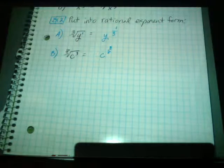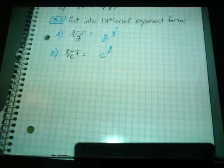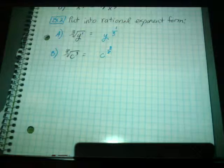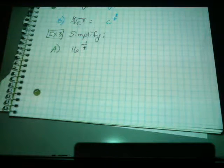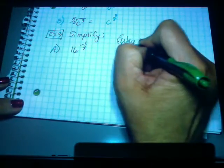So we're totally clear on how to go into radical form and out of radical form. Now we're going to simplify things that have fractional exponents. Example 3, question A: we've got 16 to the negative 1-4th. There are actually two ways that we can simplify this, and you need to decide what way works best for you.